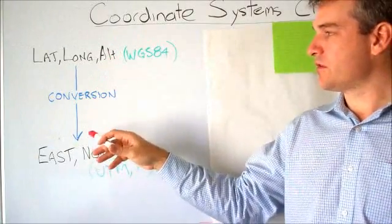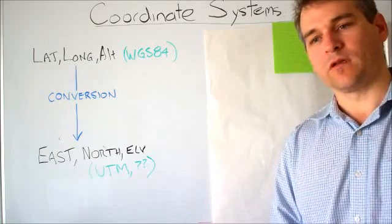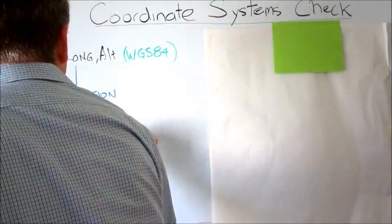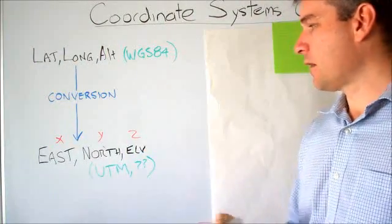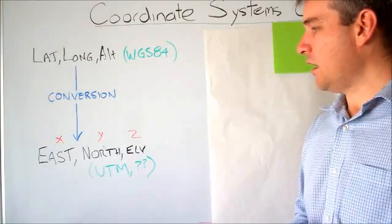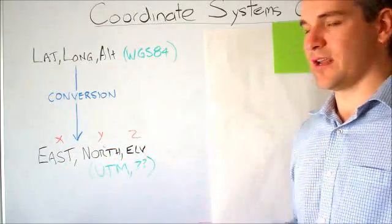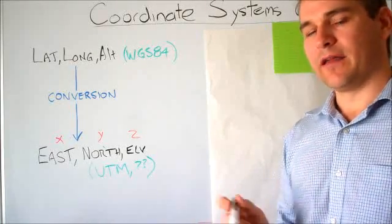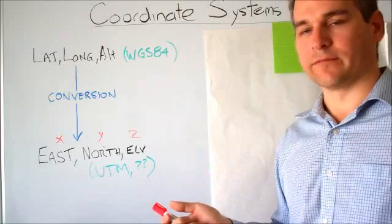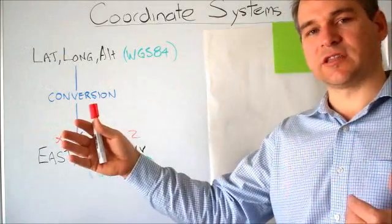But to convert that, there's a conversion to take it to eastings, northings, and elevation that we usually use for our calculations and designs, also called X, Y, and Z. It's basically a measurement in the eastings direction, north direction, and elevation. The issue is that there are different ways to convert latitude, longitude, and altitude to eastings, northings, and elevation. A common one is called UTM, but there are many others and some proprietary ways. Some GPS hardware may have their own way of doing it. They're generally similar, but over distance they can creep off from each other.